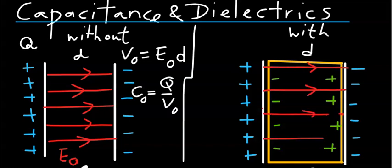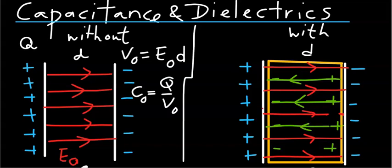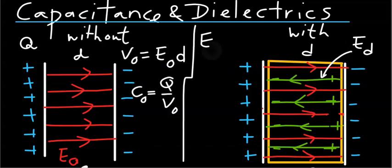as was in the original capacitor with vacuum in between the plates, there will be a weaker electric field within the dielectric going in an opposite direction, as represented by these green arrows. Let's assume the magnitude of this weaker electric field is E sub D. The net electric field within the system is quite simply the original field E0 minus ED.